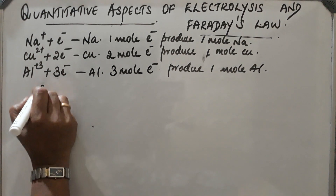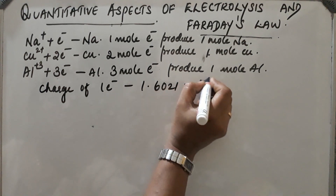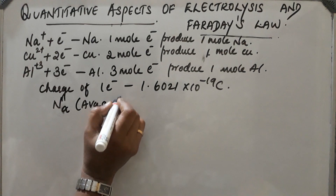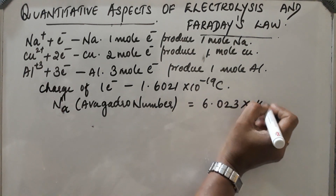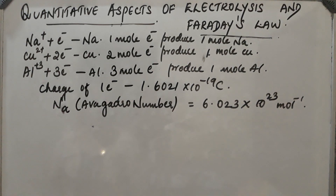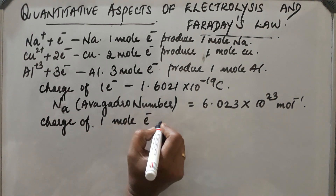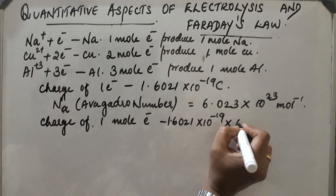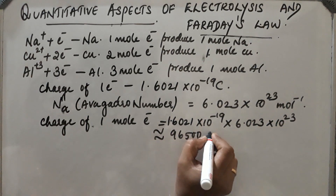The charge of one electron is 1.6021 × 10⁻¹⁹ Coulomb, and Avogadro's number is 6.023 × 10²³ mol⁻¹. So, the charge of one mole of electrons equals the charge of one electron multiplied by Avogadro's number: 1.6021 × 10⁻¹⁹ × 6.023 × 10²³, which is approximately equal to 96500 Coulombs per mole.